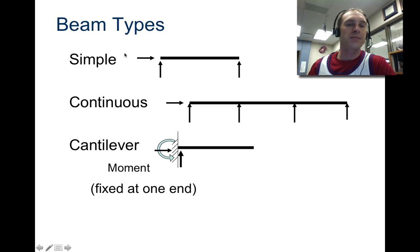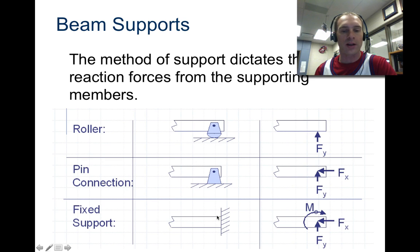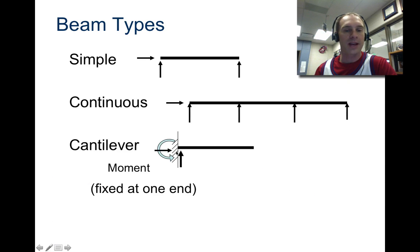So here again are our beam types. You have a simple beam, a continuous beam with multiple supports, and then a cantilever. Cantilevers are the ones that have that moment, so I'm going to go back a picture. That's this one right here. The fixed support is a cantilever type beam.